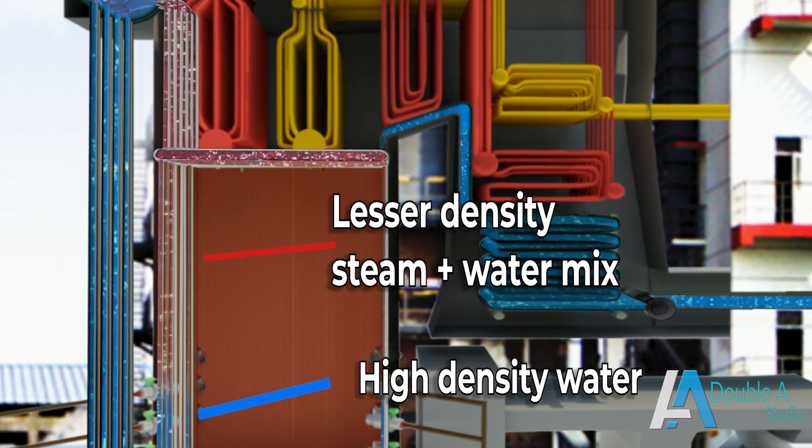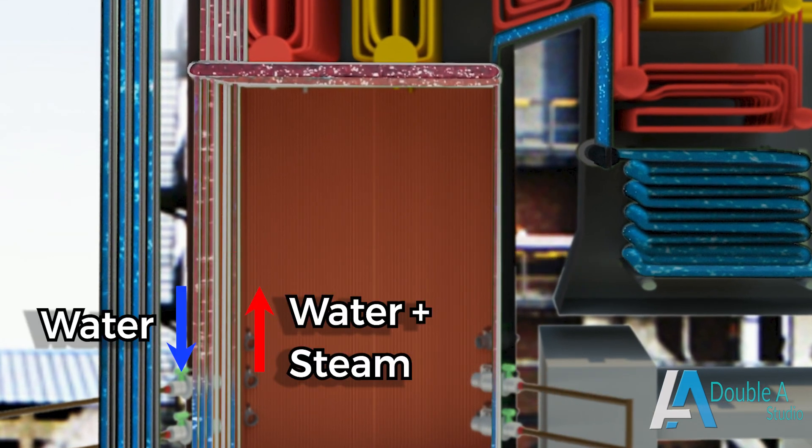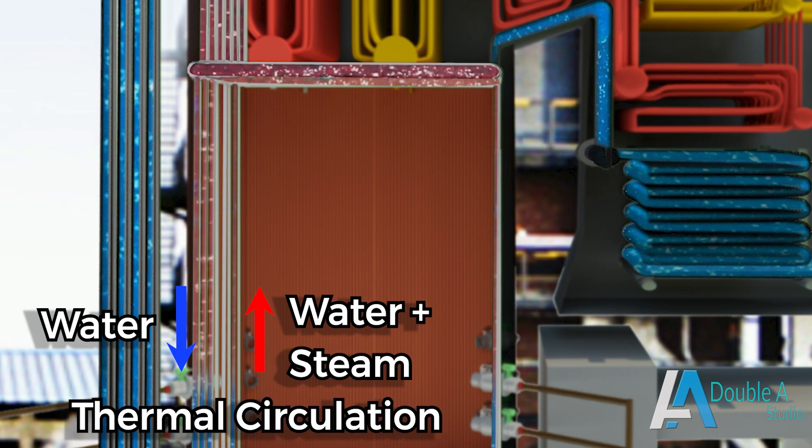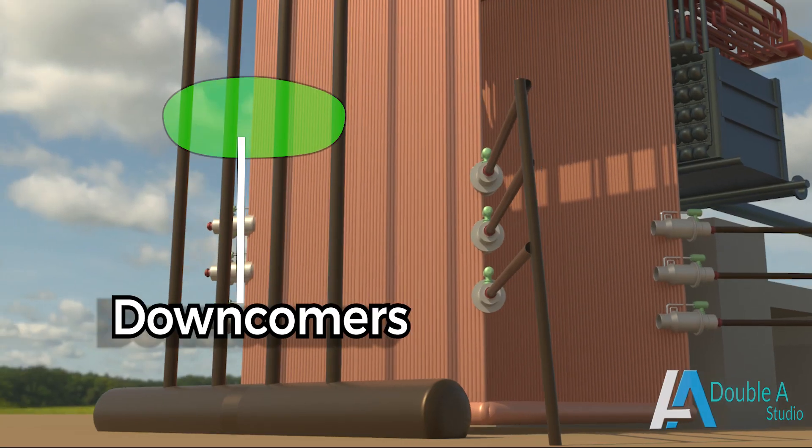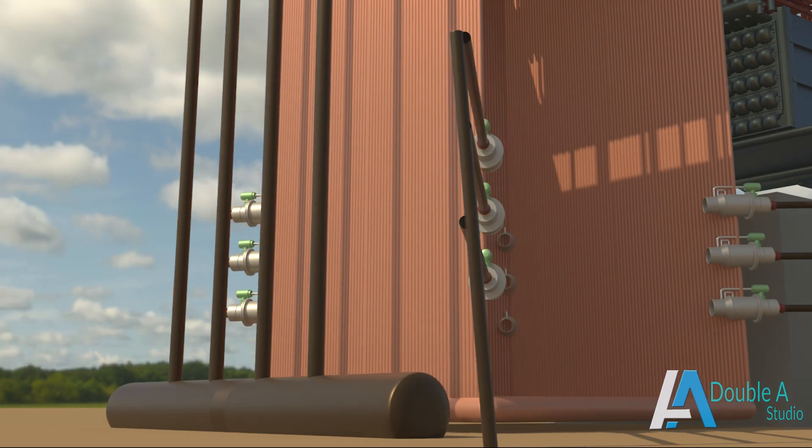The density of heated up water and steam is lesser than the density of water fed. This causes lighter steam-water mixture to rise and the denser water to move down. Such a movement of water and steam is called thermal circulation. Now we come to downcomers.